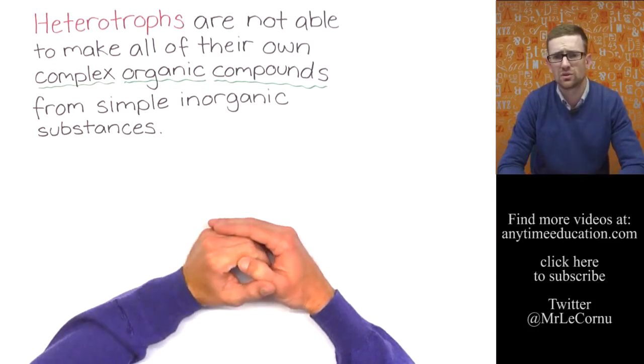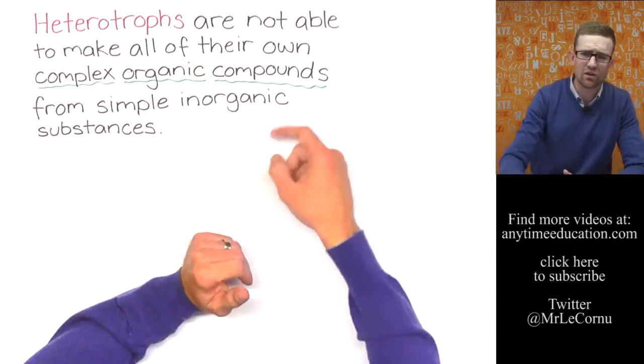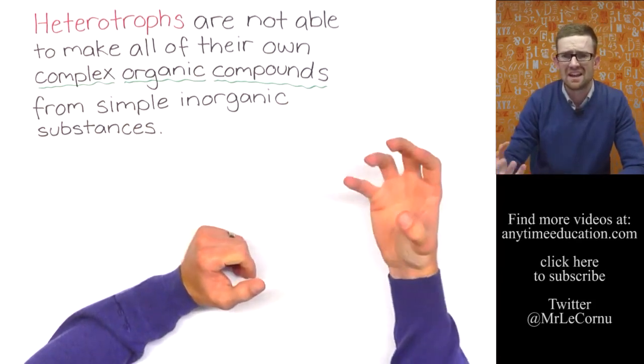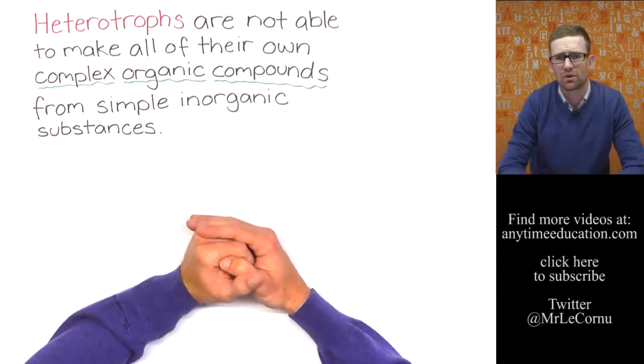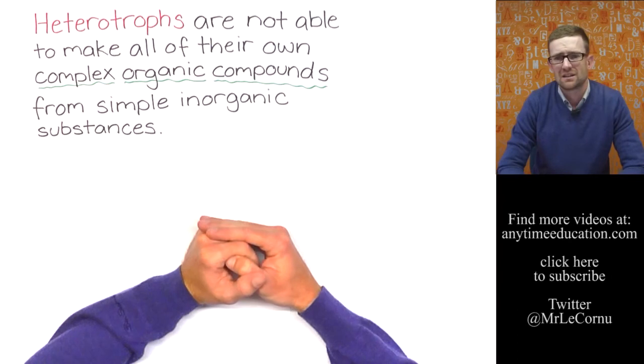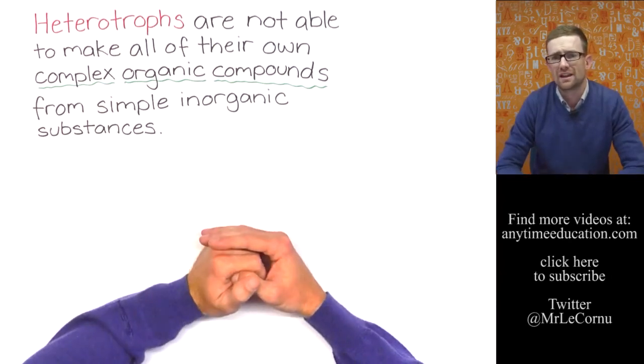Heterotrophs are consumers because they can't make their own complex organic compounds. They need to eat or take in other organisms or their products to get the complex organic compounds or the glucose or the food that they need.